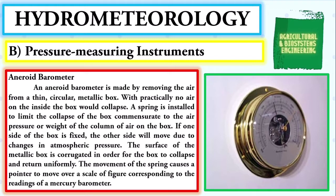Next, the aneroid barometer — made by removing the air from a thin circular metallic box. With practically no air inside, the box would collapse, so a spring is installed to limit the collapse commensurate to the air pressure. If one side of the box is fixed, the other side will move due to changes in atmospheric pressure. The surface of the metallic box is corrugated so the box collapses and returns uniformly. The movement of the spring causes a pointer to move over a scale corresponding to readings of a mercury barometer.